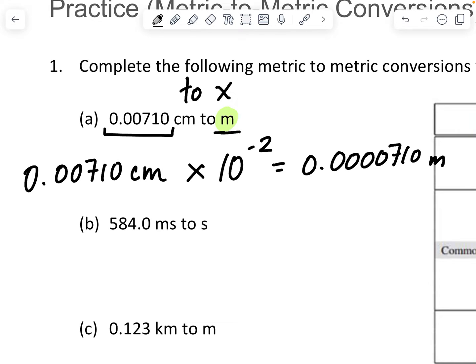And so meters are a bigger amount. And so it's a smaller number of that amount. So it's kind of logical. But I multiplied by the number that was in the table. So that's going to the base unit.